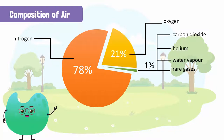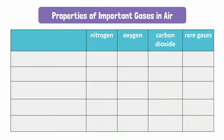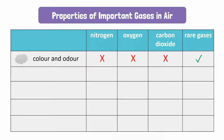Let's start with the general properties of the four main gas types in the air: Nitrogen, Oxygen, Carbon Dioxide, and Rare Gases. We will compare their properties with a simple table. All four types of gases are odourless and colourless, except some rare gases which glow in the presence of electricity.